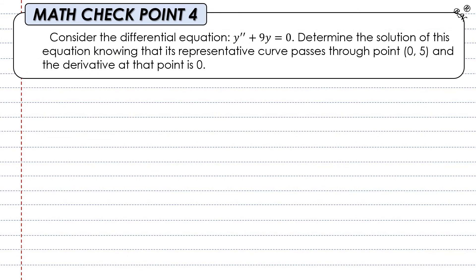Math checkpoint 4: Consider the differential equation y'' + 9y = 0. Determine the solution. This time we are given that the representative curve passes through point (0, 5) and its derivative at that point is zero. Use the given data effectively. We have one more step you need to apply: knowing this differential equation, you should know the solution. Try to suggest either cosine or sine and simply apply. Checkpoints 3 and 4 will be discussed in a separate video.